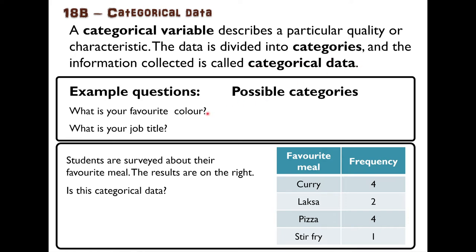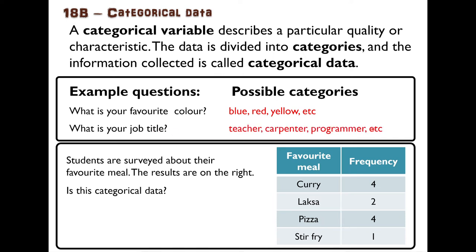For example, if you're doing a survey and ask the question, what is your favourite colour? All of the answers will fit into certain categories rather than numbers — categories like blue, red, yellow and so on. If you ask the question, what is your job title? The answers will fit into categories like teacher, carpenter, programmer, etc. The answers are words rather than numbers.